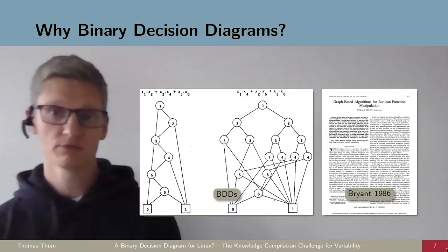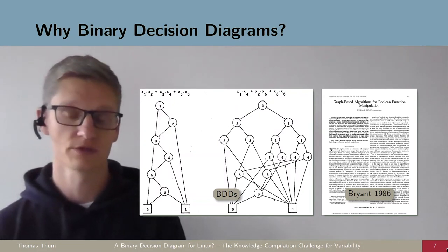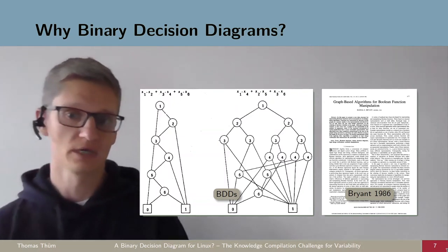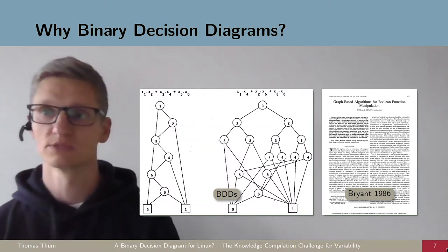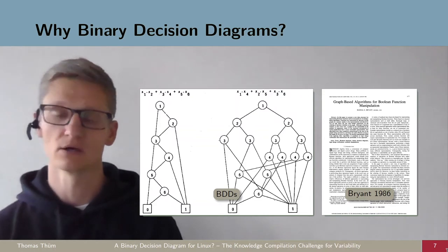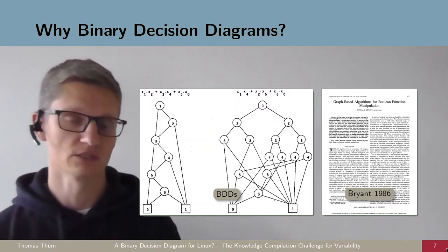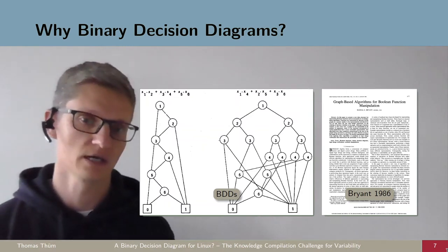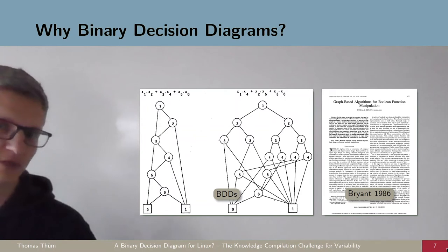First of all, binary decision diagrams are more than 30 years old and they go back to Bryant. Here's one small example. What you do is you can basically encode any propositional formula into a graph data structure. Any in principle and theory, I will come to that in a minute. The idea is we have nodes for each variable. If you select it, you go to the right. If you do not select it, you have the false edge, which goes to the left.